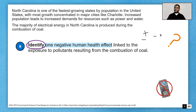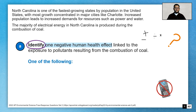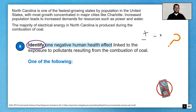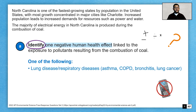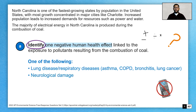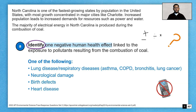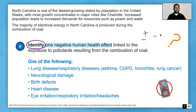So what's a negative impact linked to the pollutants of coal? It's going to be one of the following — and remember, just one of the following, so don't give lots of answers as mentioned in previous videos. You can get lung disease, and you do need to be specific: say asthma, COPD, bronchitis, or lung cancer. You could also talk about neurological damage, birth defects, heart disease, eye irritation, respiratory issues, or headaches.